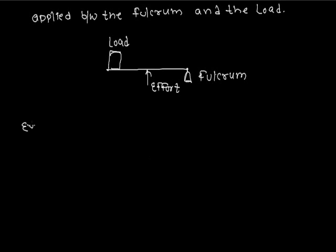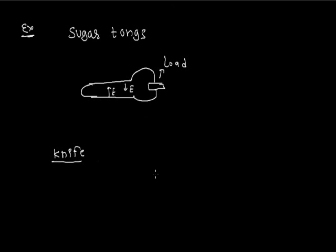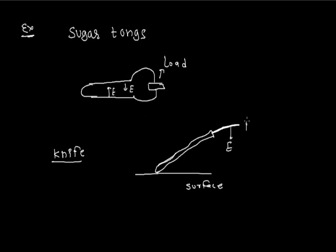For example, sugar tongs — the load is on one end, effort is applied in the middle. Another example is a knife: this is the surface, the effort is applied here, the fulcrum is here, and the load is here.